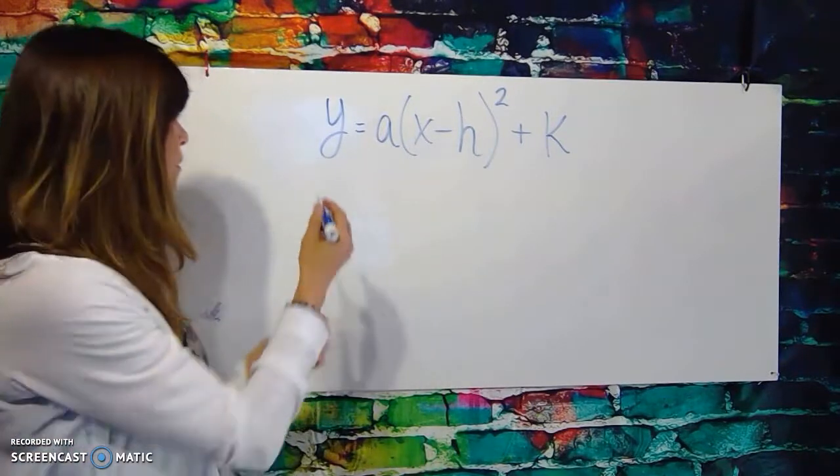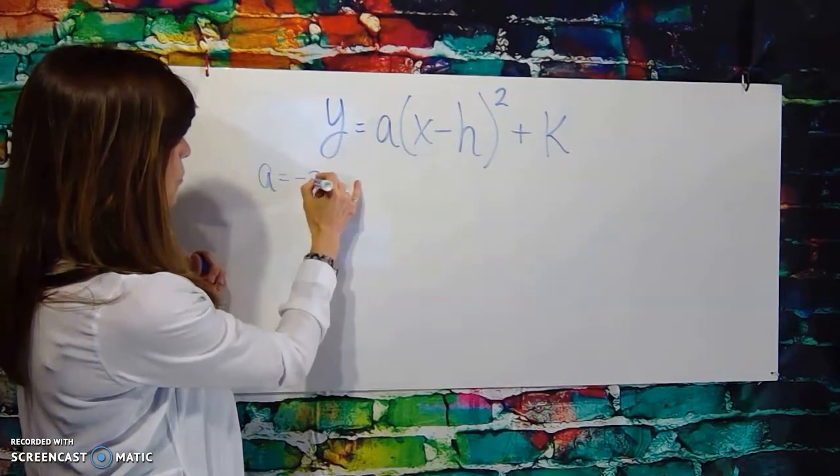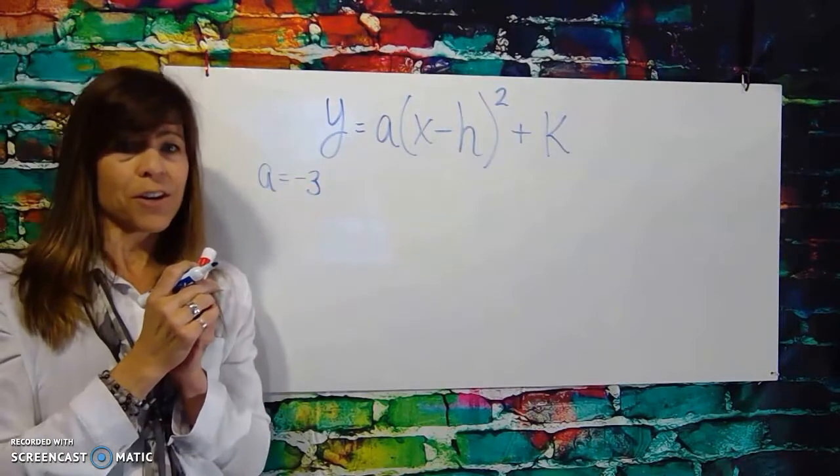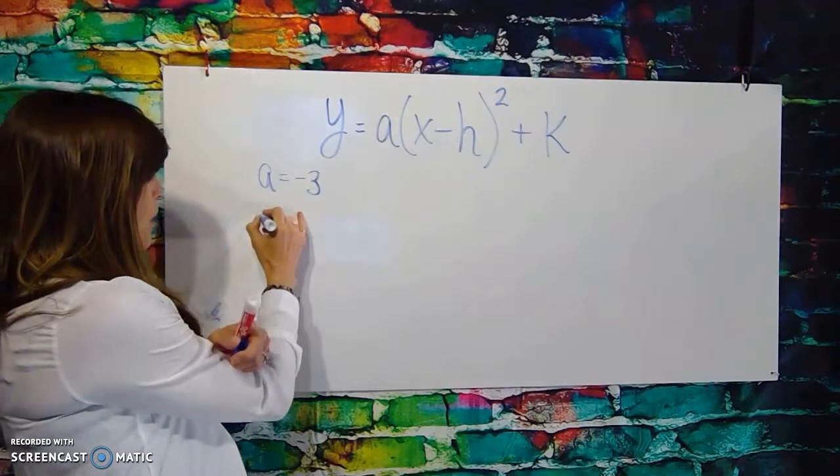If we have an a value of, for example, a negative 3, that means our parabola is going to be opening down. It's going to be kind of skinny. If we have an h value...